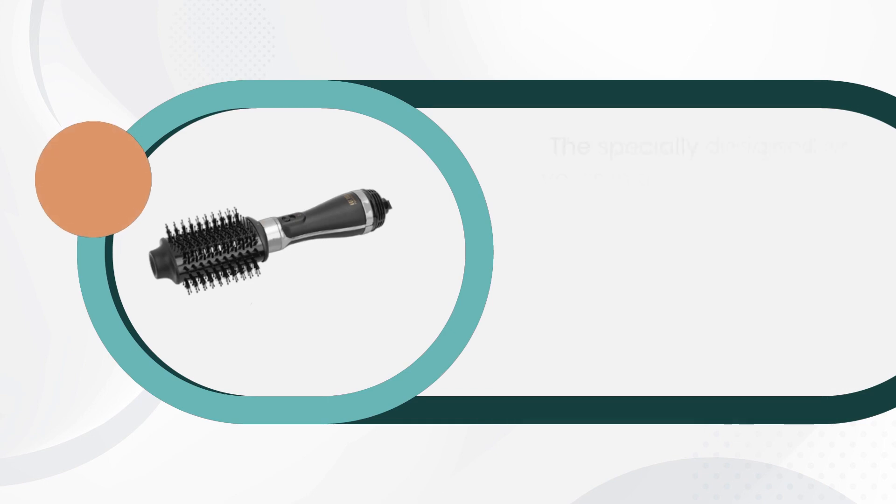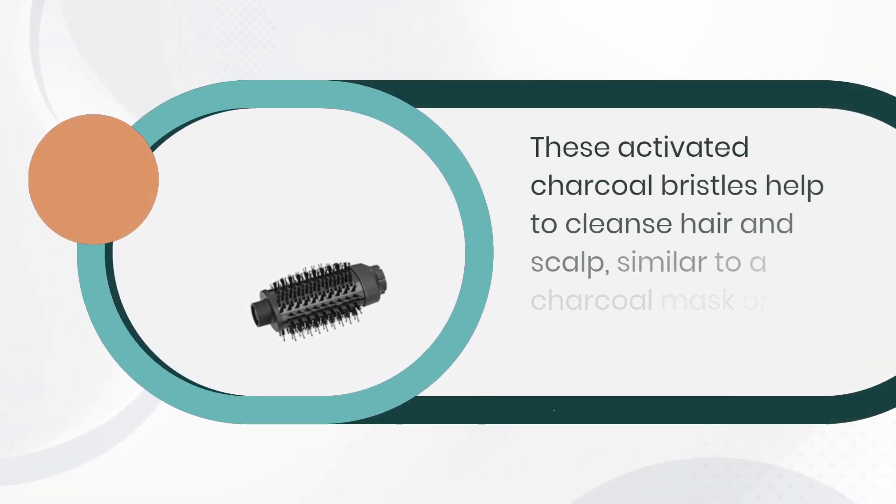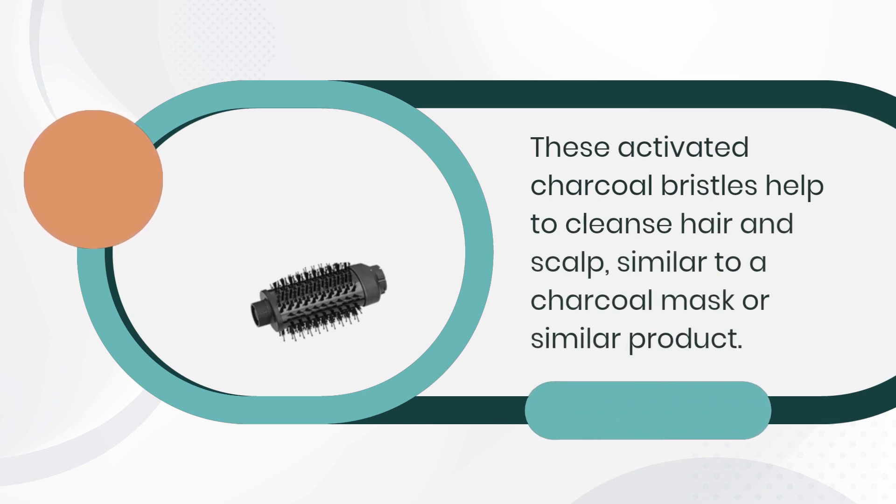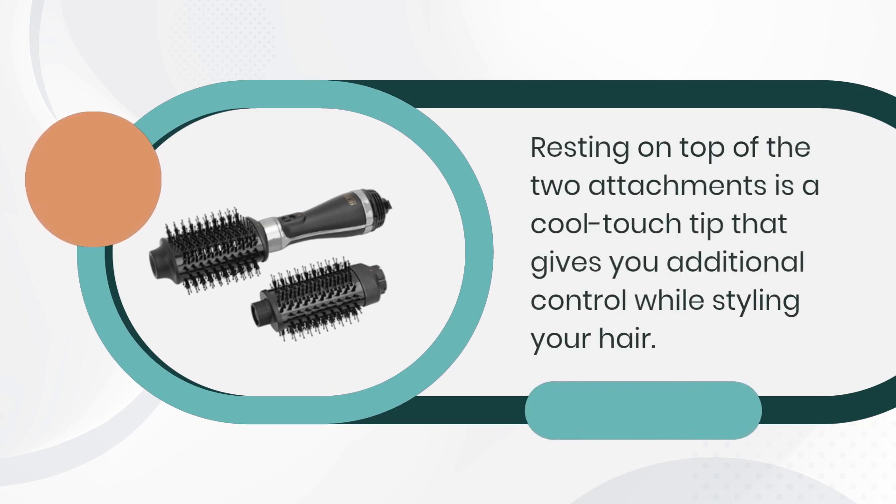The specially designed air vents in the barrel of each brush are surrounded by two rows of bristles, one row of activated charcoal nylon bristles and another row of boar hair bristles. These activated charcoal bristles help to cleanse hair and scalp, similar to a charcoal mask. Resting on top of the two attachments is a cool touch tip that gives you additional control while styling your hair.